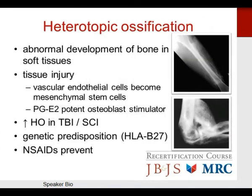Heterotopic ossification is the abnormal development of bone in soft tissues. Vascular endothelial cells become mesenchymal stem cells, which become osteoblasts via transcription growth factors. Increased HO is seen with traumatic brain injuries and spinal cord injuries. Some patients have genetic predisposition such as those with HLA-B27. NSAIDs can be used to prevent this.